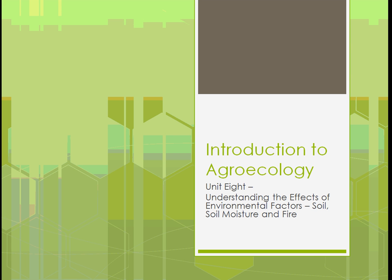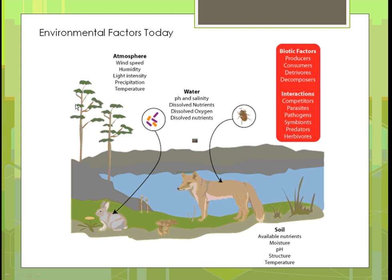We're going to talk about the effects of soil split into three sections. This diagram shows an example of the different environmental factors we'll be looking at. In the atmosphere, there's wind speed, humidity, light intensity, precipitation, and temperature, and how they affect plant growth. We're also going to look at water and soil — the pH and salinity, how much moisture is in it, dissolved nutrients and oxygen, and the structure and temperature of soil.